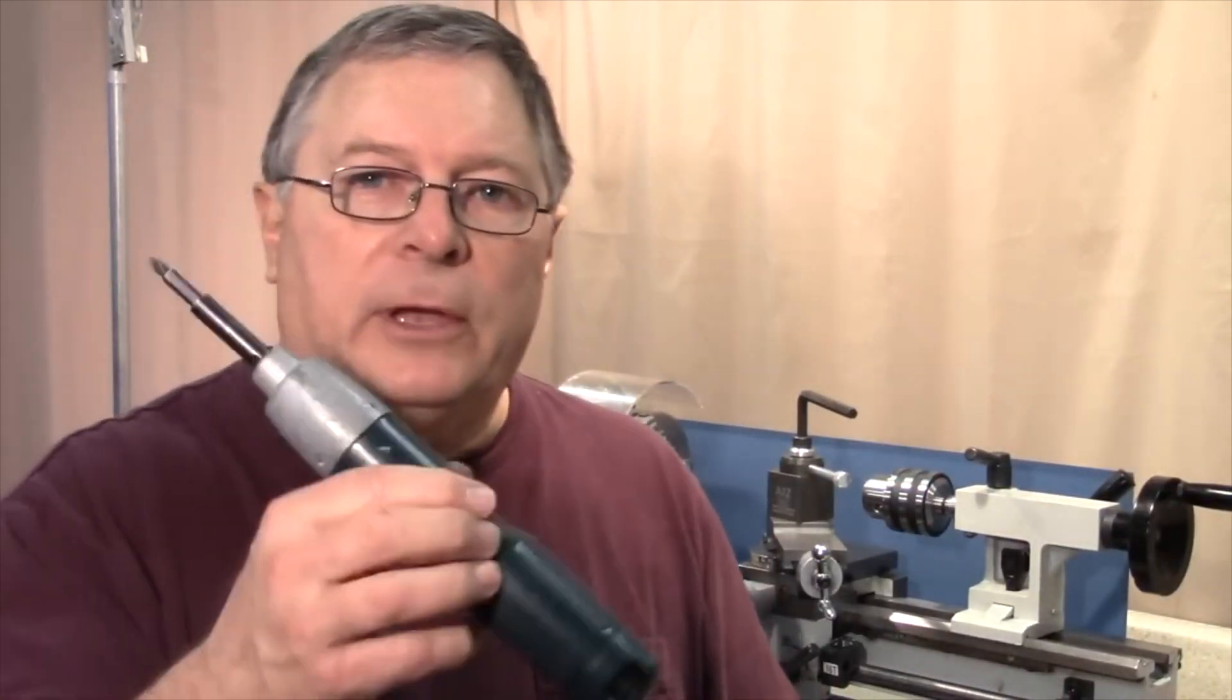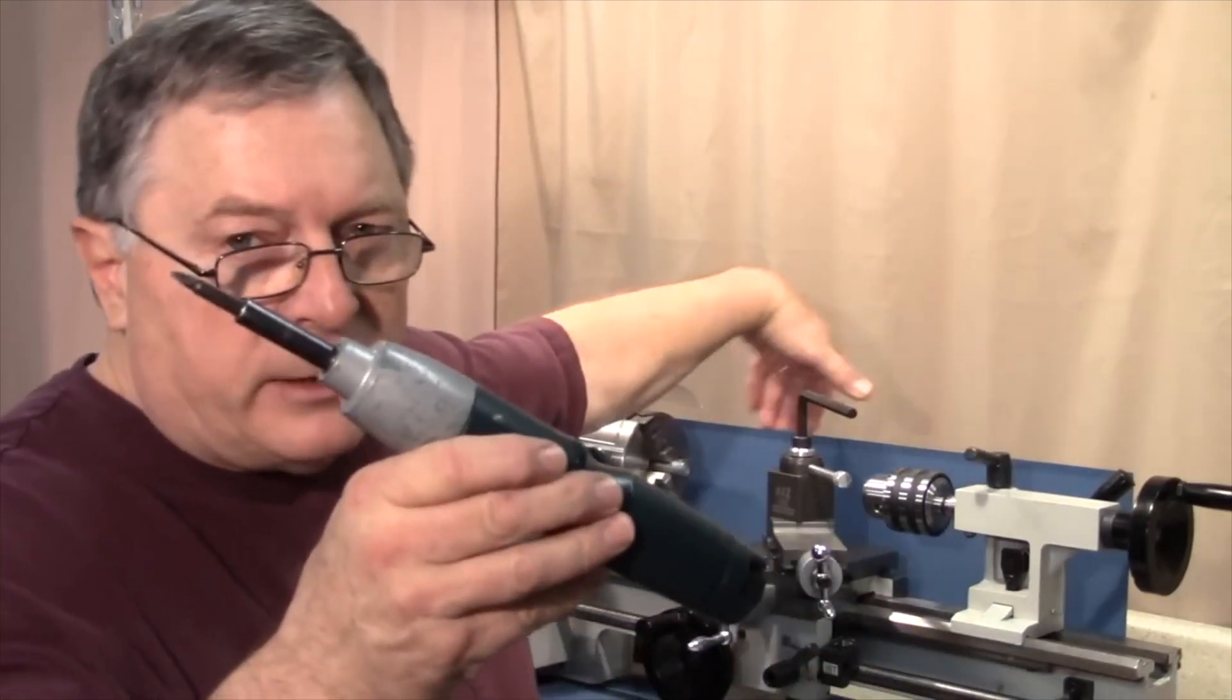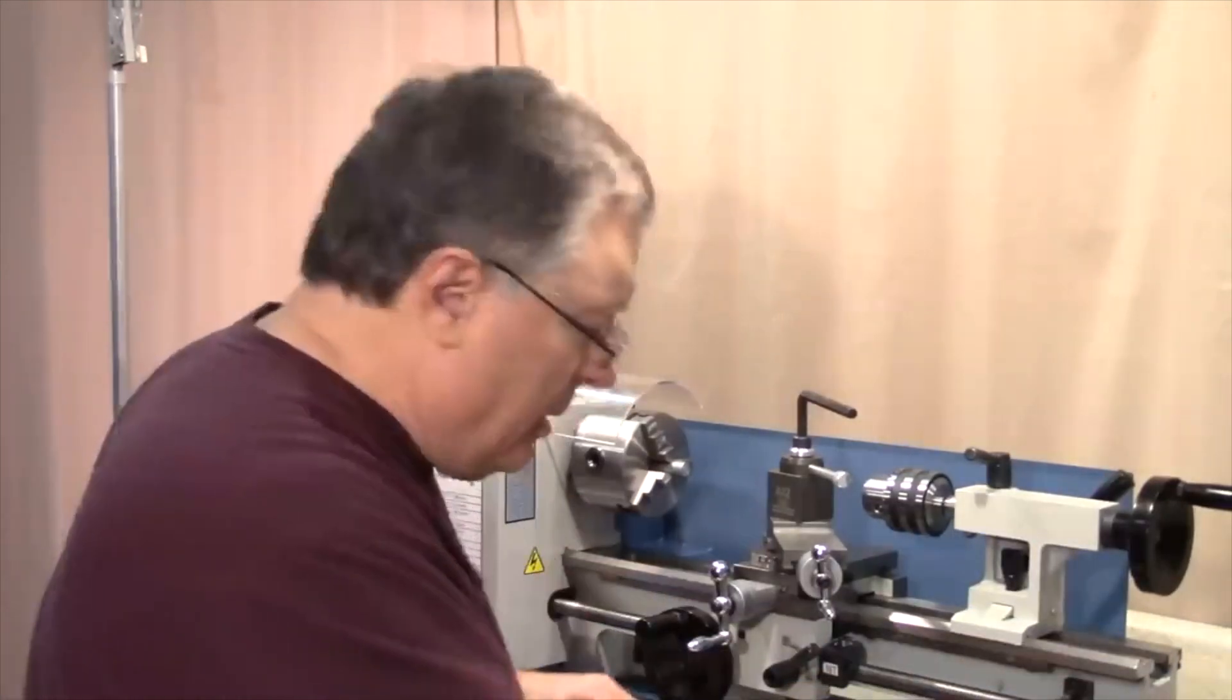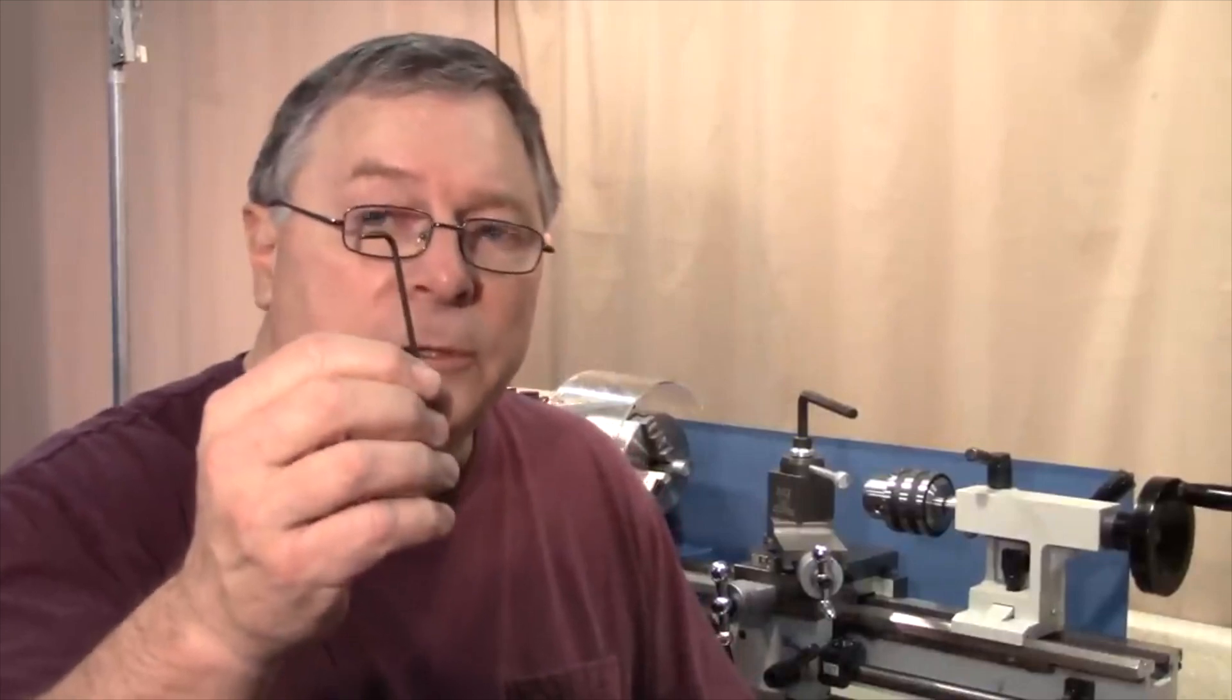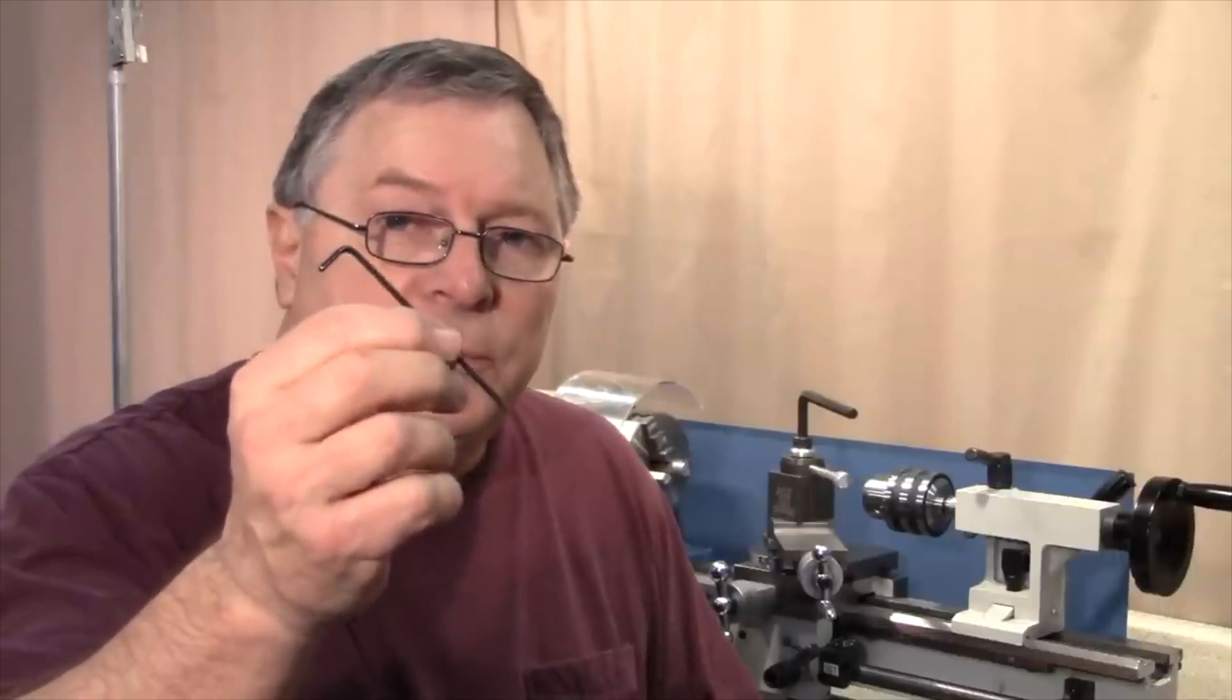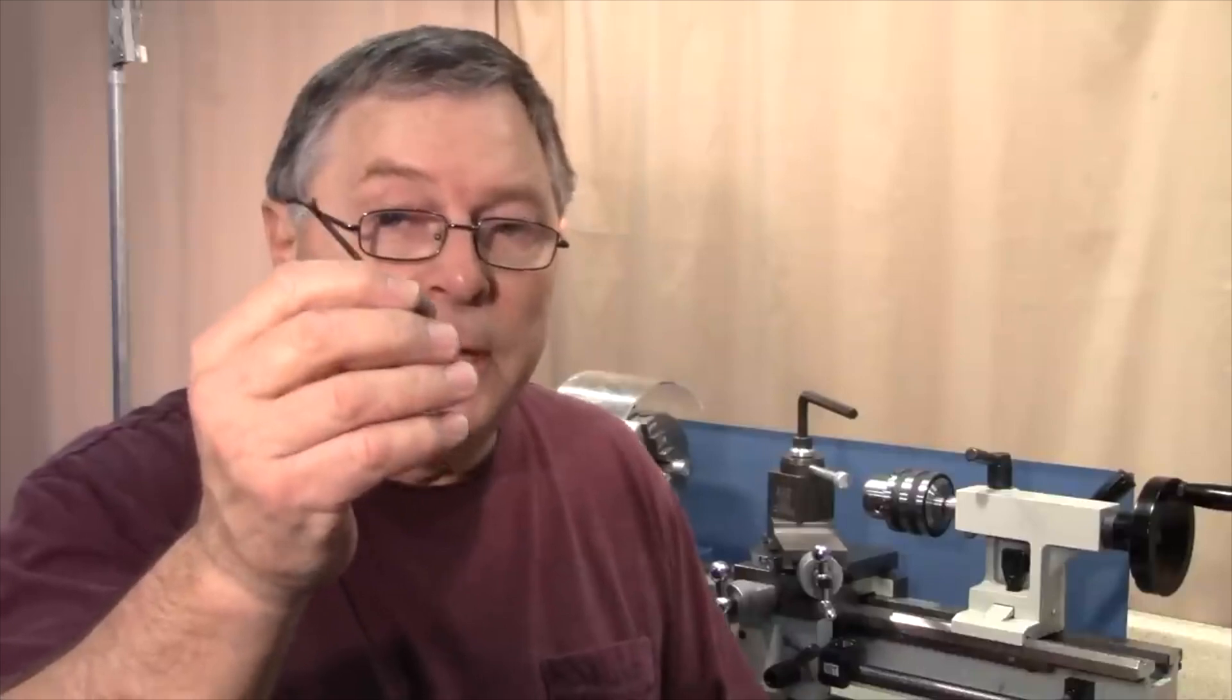A power screwdriver if you have one is a good thing to have. We're going to remove a bunch of screws from the back of this chip guard. One thing you do have to have though is a 2.5mm hex wrench. This is not included with the wrenches that come with the mini lathe, so be sure you have this on hand before you begin.